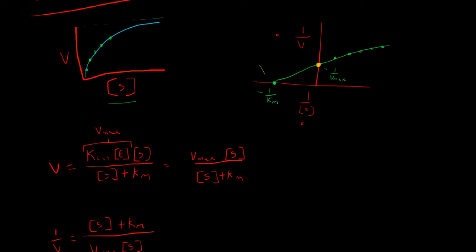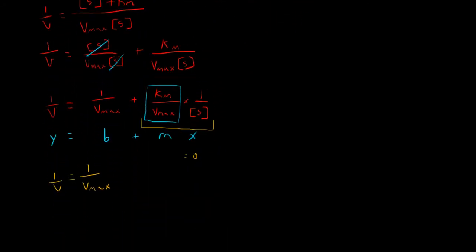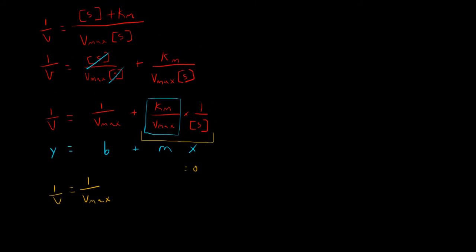So now if we try to calculate out the x intercept here, if we substitute zero for our y value, we can rearrange this a little bit. I'm actually going to write it over on the right side here. So we have zero equals one over Vmax plus Km over Vmax times one over substrate concentration. So this is our x value and we want to solve for that. So we have negative one over Vmax over here equals Km over Vmax times our one over substrate concentration.